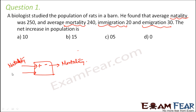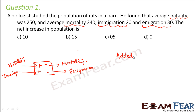Emigration means people moving out of this population, so it subtracts from the population. To find the net increase, we first calculate what was added: natality plus immigration. Whatever new births took place plus whoever immigrated gives the total increase in population. That is 250 plus 20, which equals 270.